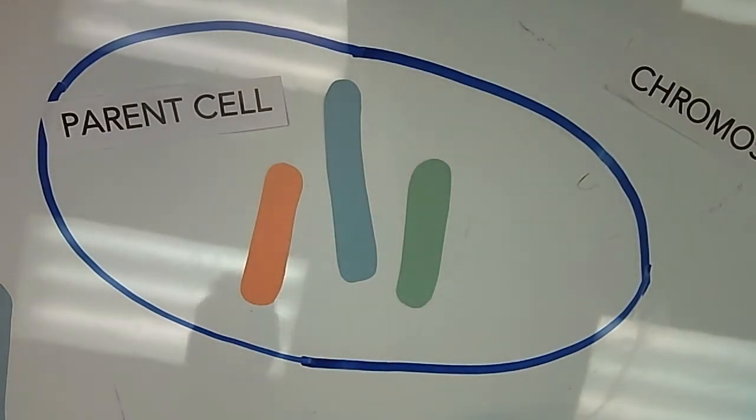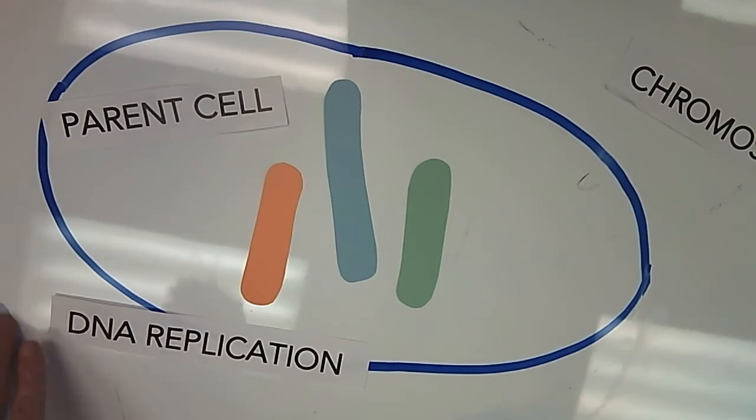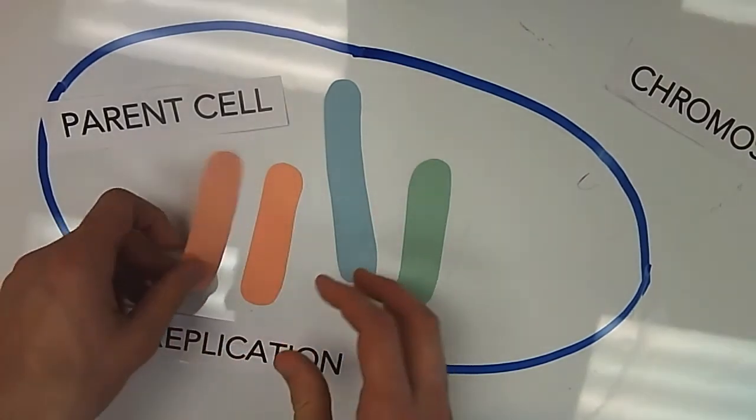And before the cell is going to split, what we need to have is DNA replication. Or in other words, these chromosomes need to make copies of each other.